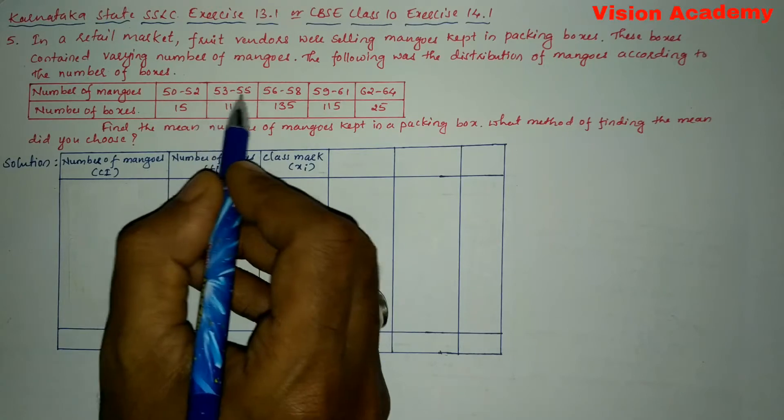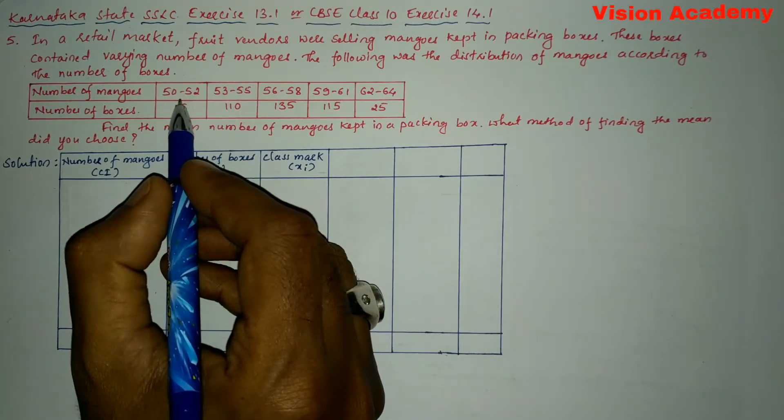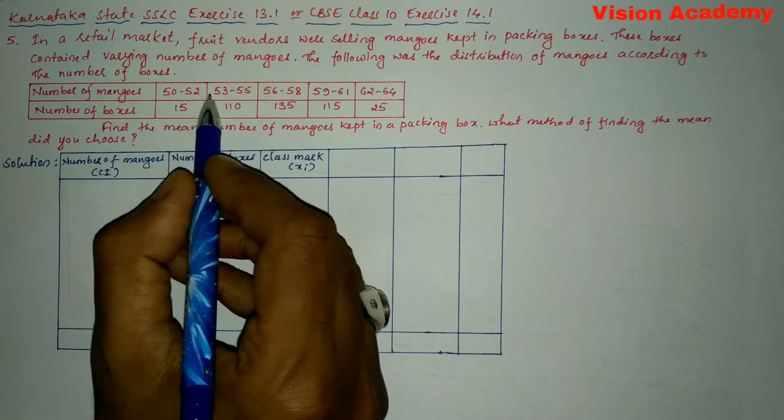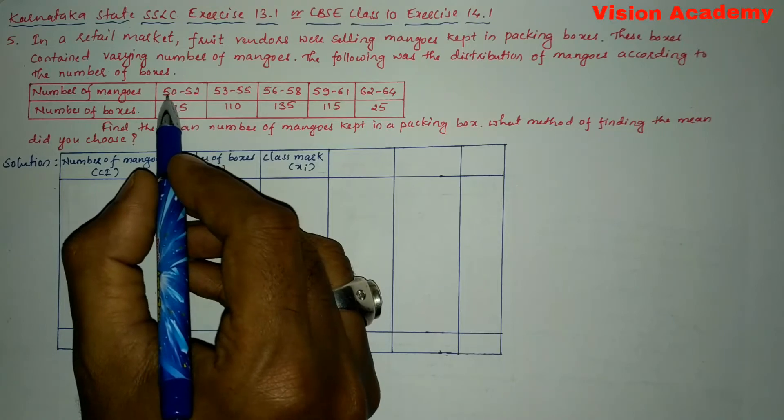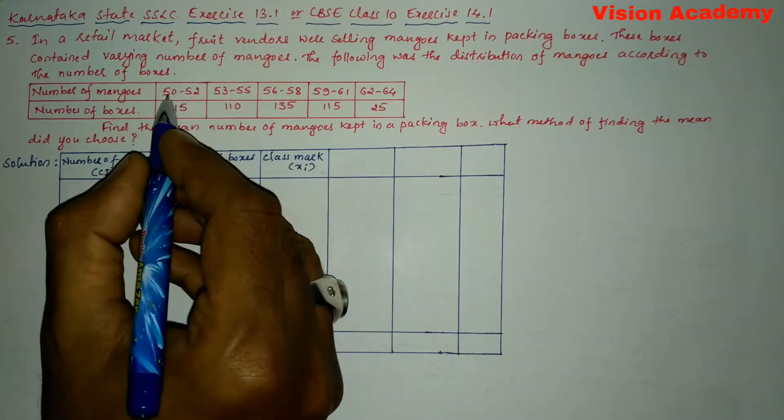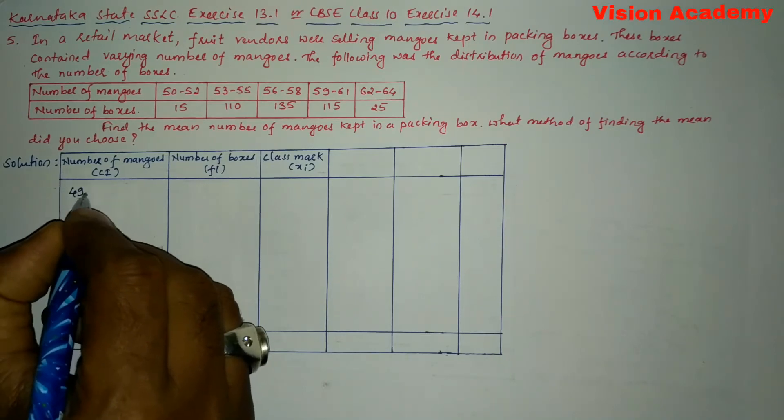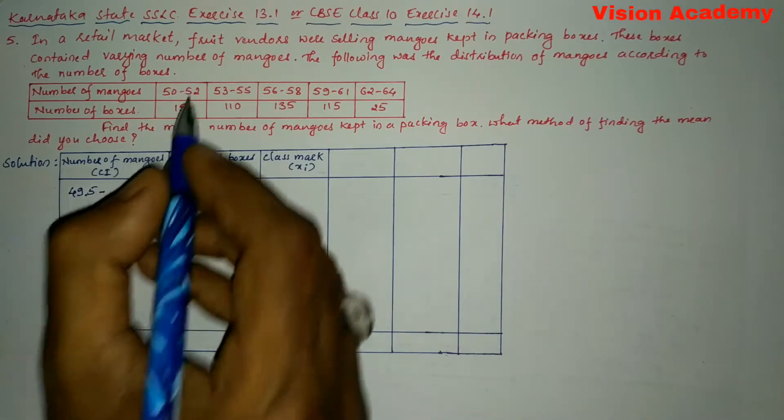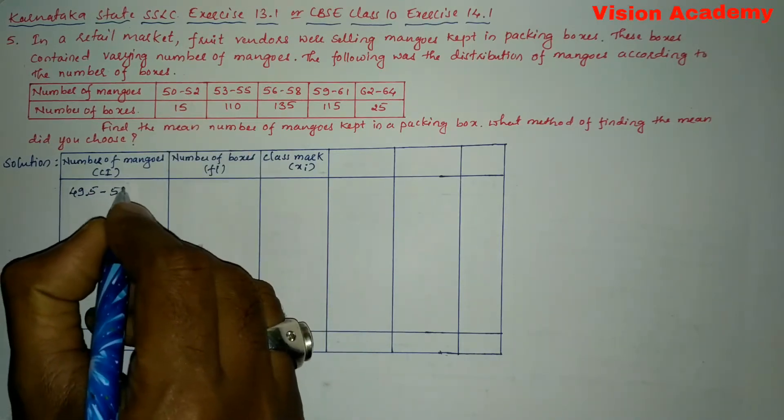Here you can see the number of mangoes class interval is 50 to 52 and 53 to 55, 56 to 58. And here data is not continuous. So here we are going to add 0.5 to the upper limit and we are going to subtract 0.5 to the lower limit. So here for the first class interval, instead of writing 50, we will write here 49.5. Next for the upper class limit, we are going to add 0.5. So that is 52.5.